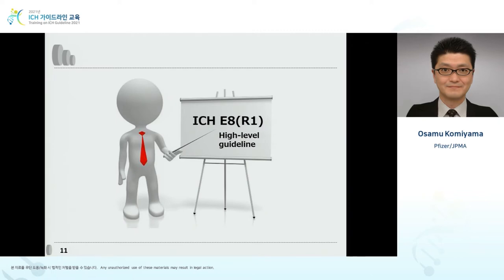E8R1 is a high-level guideline and no organization may prepare SOPs based on E8R1 only. However, E8R1 describes the philosophy of the product life cycle from the development stage to post-marketing, and this philosophy will be inherited by E6R3. E8R1 will be referenced when other guidelines are revised in future or new ones are developed. Although it has been 24 years since the original E8 was issued, we believe that E8R1 is now a guideline that will not become out of date over the next 10 or 20 years.